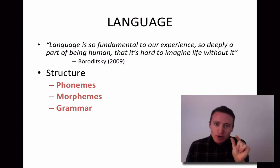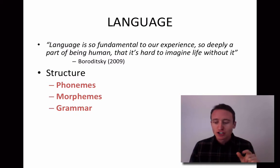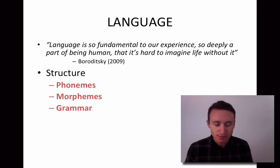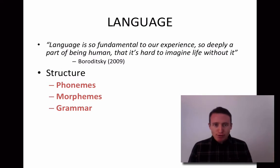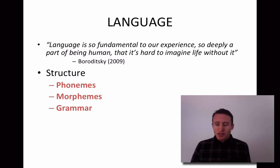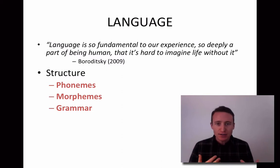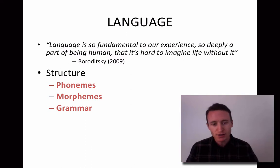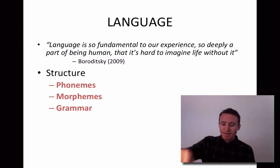When you bring phonemes together to create meaning, that's where we get morphemes. Morphemes are the smallest unit of meaning in a language — when you have the ability to convey meaning from one person to another, we're talking about morphemes. Then there's grammar, which refers to the rules of a language that allow us to communicate effectively — things like where a noun goes relative to a verb and an adjective, so that communication can be understood.